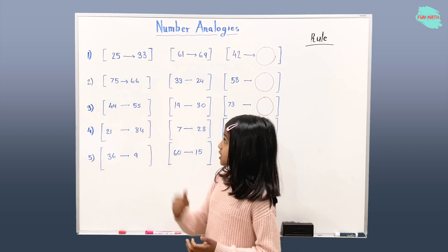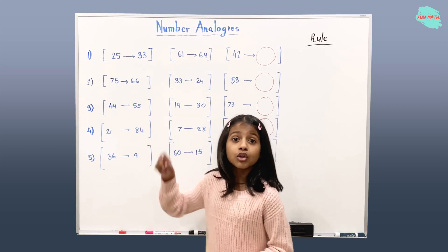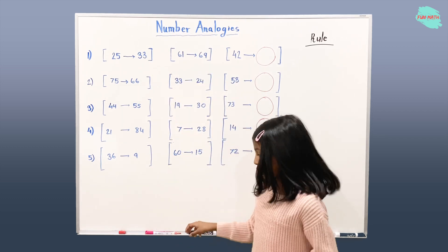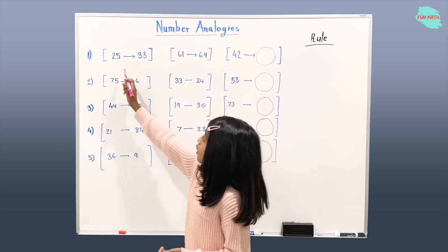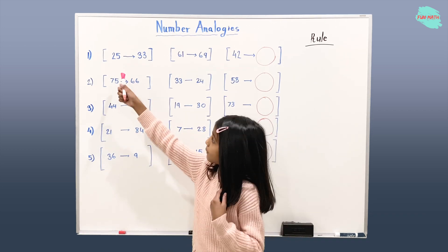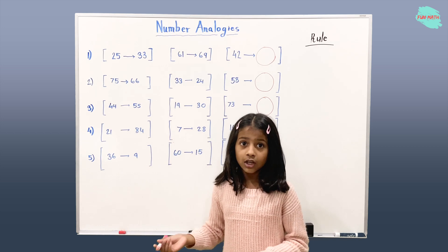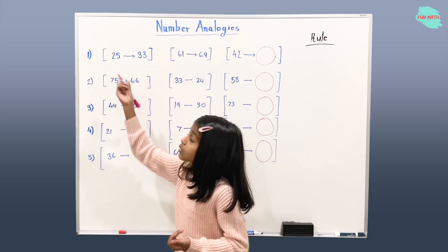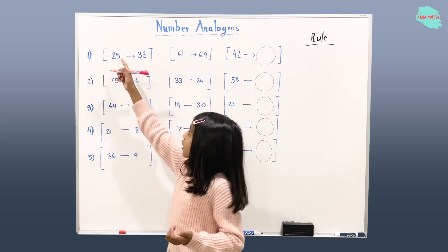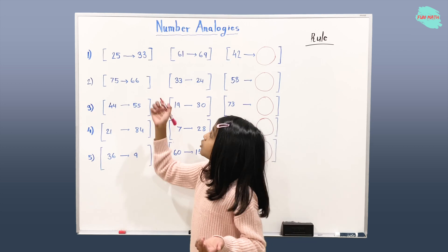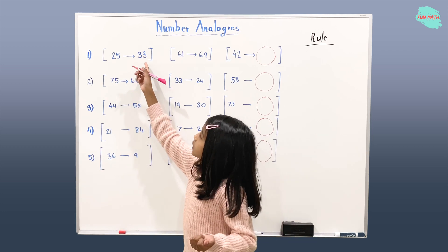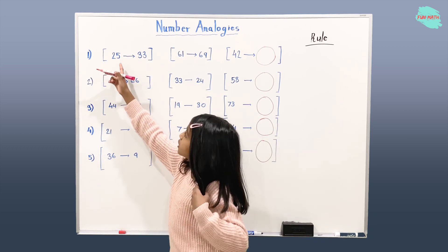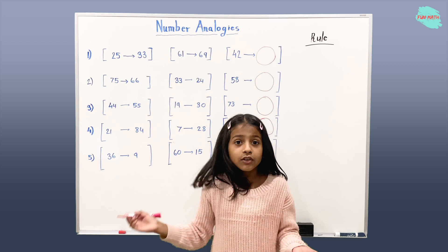Let's talk about the first example. In the first example we have three different groups: one, two, and three. We have the numbers 25 and 33. So here, 25 plus something will equal 33. So 25 plus 8 will give us 33, right?